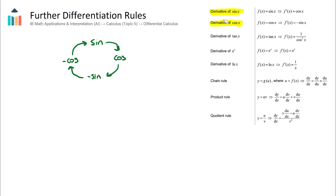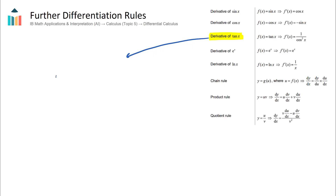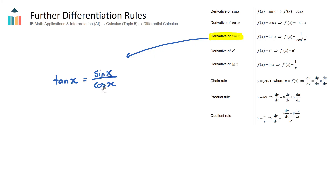The derivative of tan of x is interesting. We don't need to know the proof, but it is related to the quotient rule. From our formula booklet, tan of x can be written as sine of x over cos of x. If we treat tan of x as sine x over cos x and apply the quotient rule, we find that the derivative equals 1 over cos²x. As an exercise, ambitious students can verify this using the quotient rule.